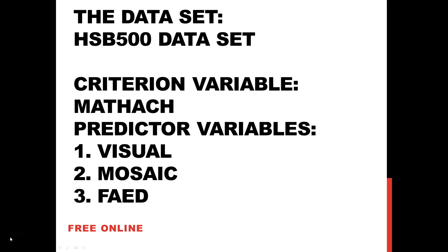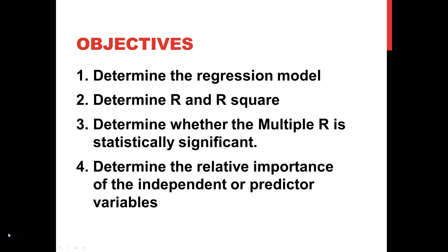The scores for Visual range from negative 4 to 16. Our second predictor variable is Mosaic, which is a 56-item test involving detection of relationships and patterns of tiles, with scores ranging from negative 28 to 56. Our final predictor variable is Father's Education, which is the highest level of the father's education, with values from 2 (less than high school) to 10 (PhD, MD, or other advanced degree).